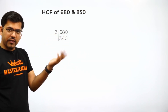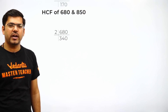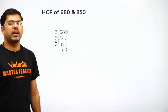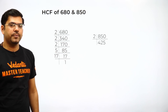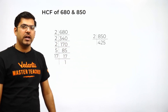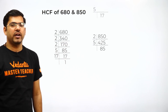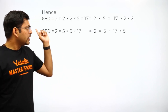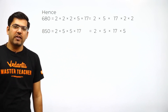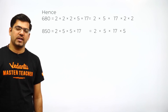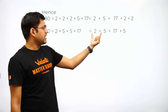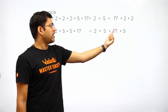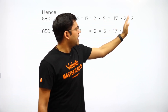Dividing 680 by 2 for prime factorization and similarly dividing multiple times gives all the prime factors. For 850, dividing by 2, then by 5, then by 5 again, then by 17 gives all the numbers. So the prime factors are: 680 = 2 × 2 × 2 × 5 × 17 and 850 = 2 × 5 × 5 × 17. I have written the common parts together.